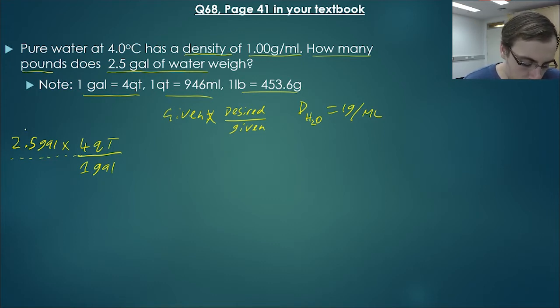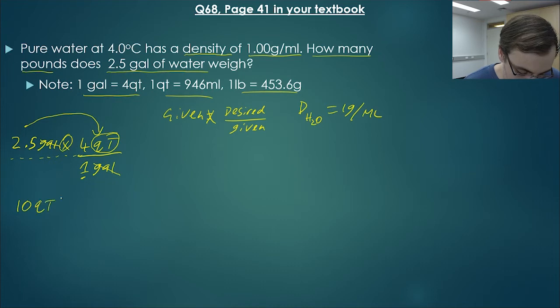We know that there are 4 quarts per 1 gallon. What we do here is we can pretend that this line here is being extended. 2.5 times 4, because we can see our multiplication here, divided by 1. And what will happen here is our units—the units gal will cancel. So 2.5 times 4 is 10, and then our gallons cancel out, and that leaves us with quarts. So we have 10 quarts.